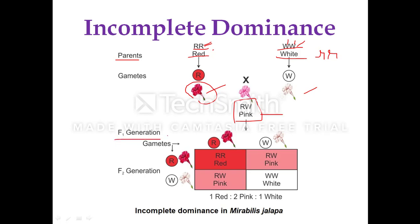When F1 plants are crossed with each other, male and female gametes are produced. The F1 plant gives 50% gametes carrying capital R and 50% carrying small r. After fusion of the gametes, you get one red plant (phenotype similar to the red parent), one white flower bearing plant, and two plants with pink flowers. This pink phenotype results from the incomplete dominance, where capital R fails to completely mask the effect of the recessive white-flower allele.